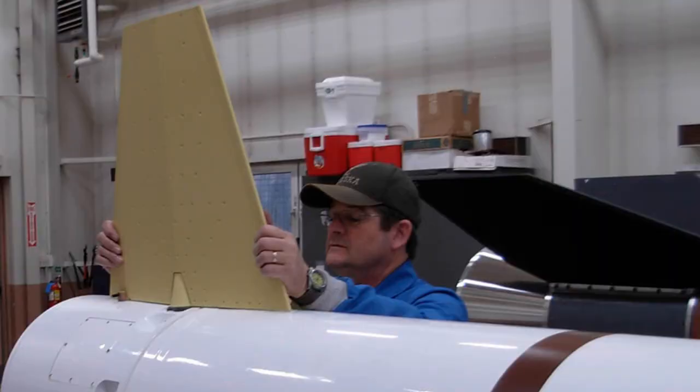Rockets also use fins to help stabilize them. The air pushes against the fins to help keep the rocket pointed in the same direction. I want you to be able to see the effect of rocket fins for yourself. So for our STEM activity today we're going to make two rockets, one with fins and one without, and you can see which one works better.